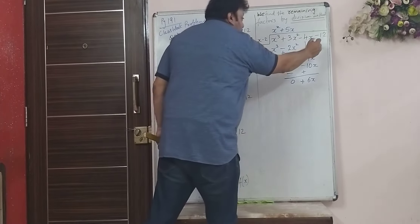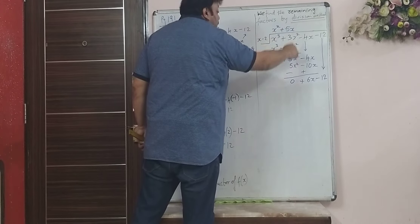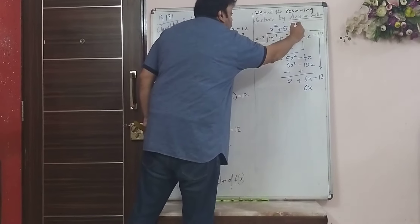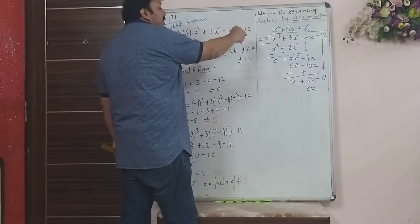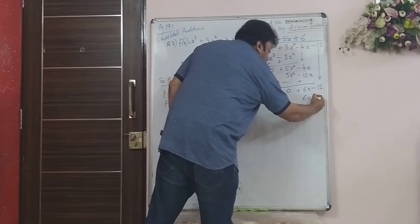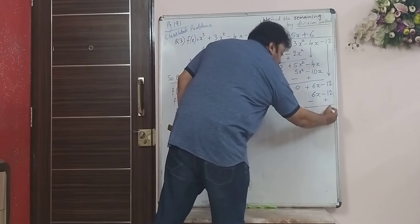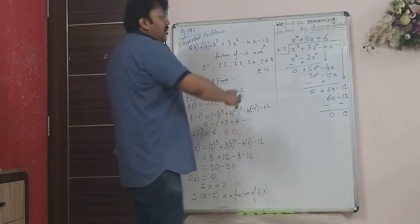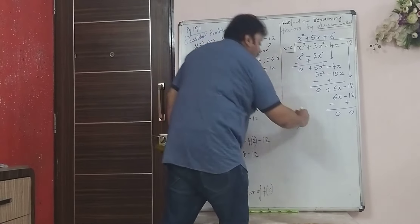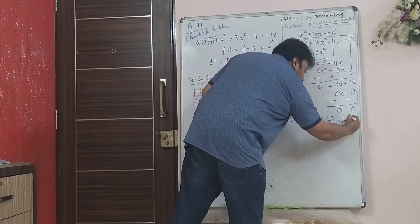Now minus 12 remains, so bring that down. What number multiplied by x gives 6x? Obviously plus 6. Plus 6 into x is 6x, and plus 6 multiplied by minus 2 gives minus 12. Again the sign changes because you are subtracting, so both become 0. Therefore f(x) = (x - 2)(x² + 5x + 6).